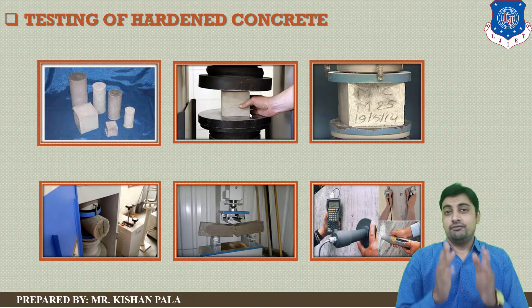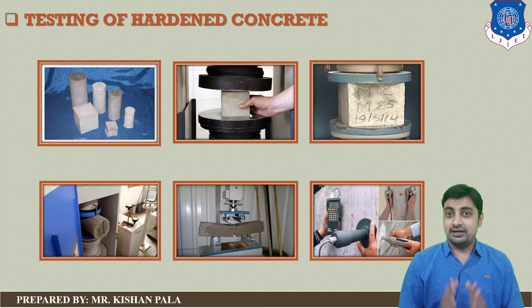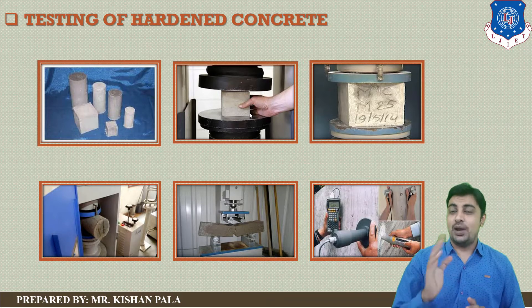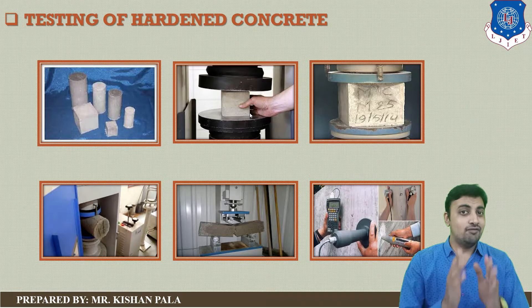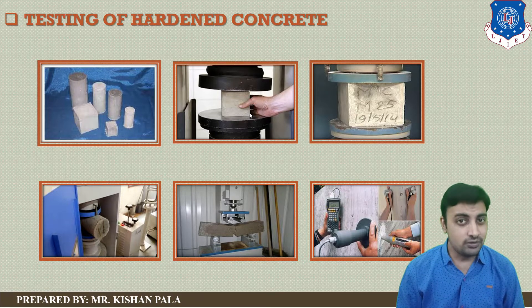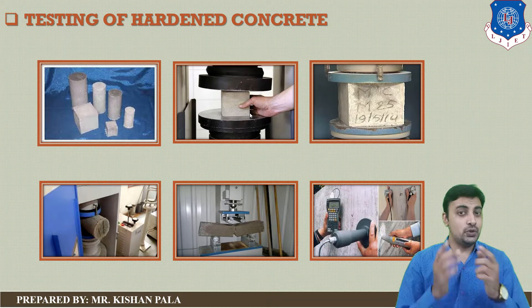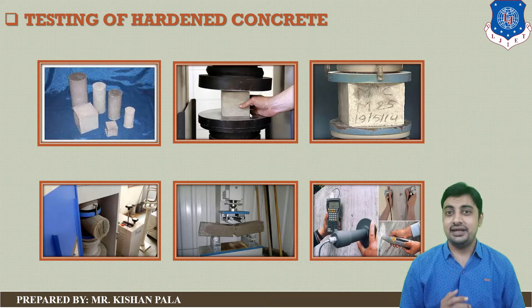We generally find the 7-day and 28-day strength for the hardened concrete mass. You have to consider the final strength at 28 days.